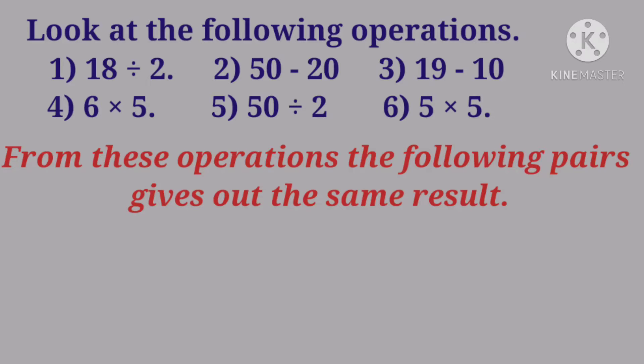From these operations, the following pairs give out the same result. 18 divided by 2 and 19 minus 10.